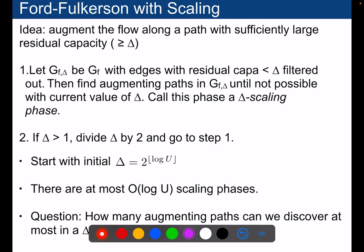It's a very generic idea that you can reuse in different contexts, which is the idea of scaling. What we will do is that we will only consider first very big augmenting paths, very large ones. We will not be interested with augmenting paths that are very small. And so we will put a threshold that is delta, and we will only consider in the residual graph edges that have residual capacity at least delta.